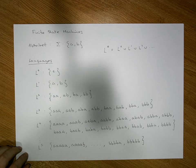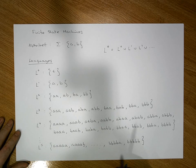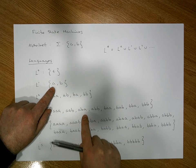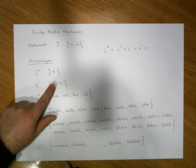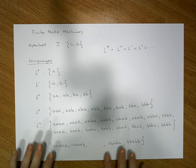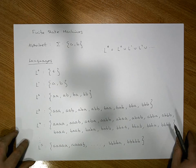What we're going to be interested in is building finite state machines where the words in the language could come from any of these particular finite languages. So let's consider an example.